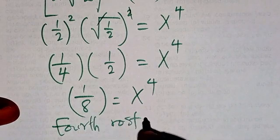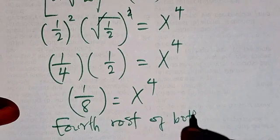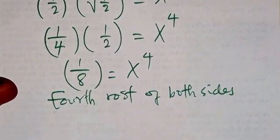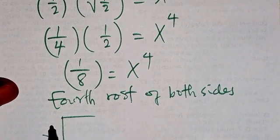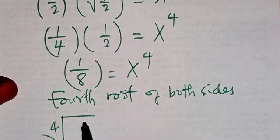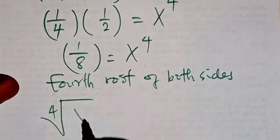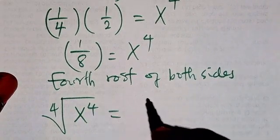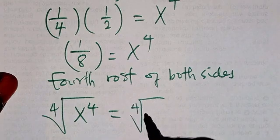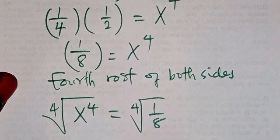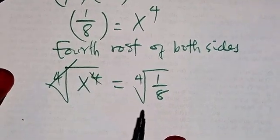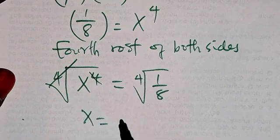Taking the fourth root of both sides, it is going to be fourth root of x to power four will equal fourth root of one over eight. So this we cancel, so we have x to be equals fourth root of one over eight.